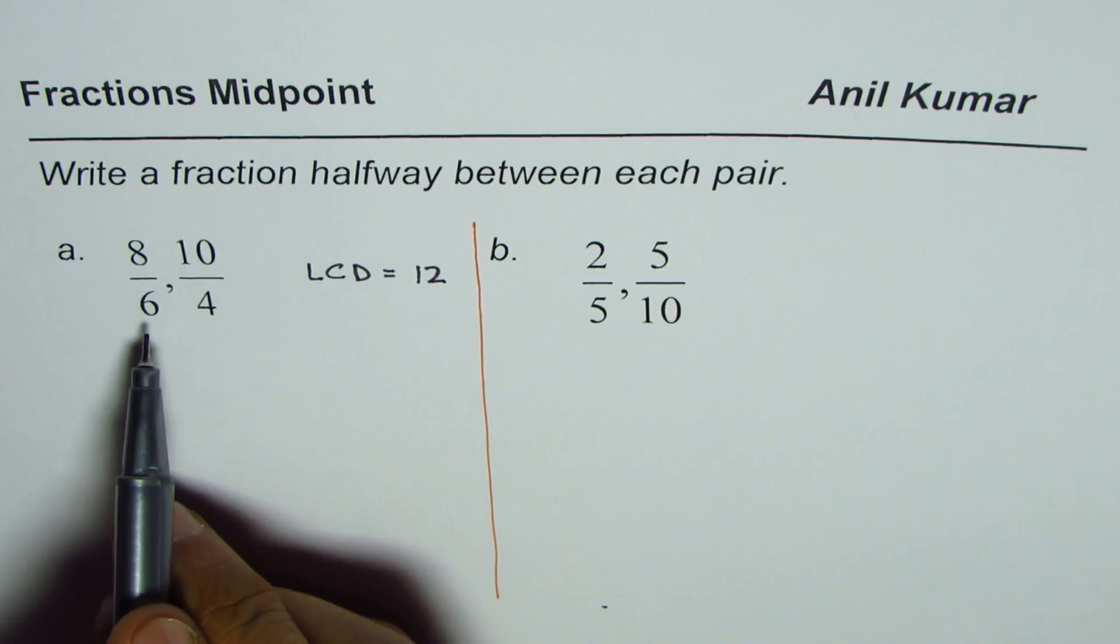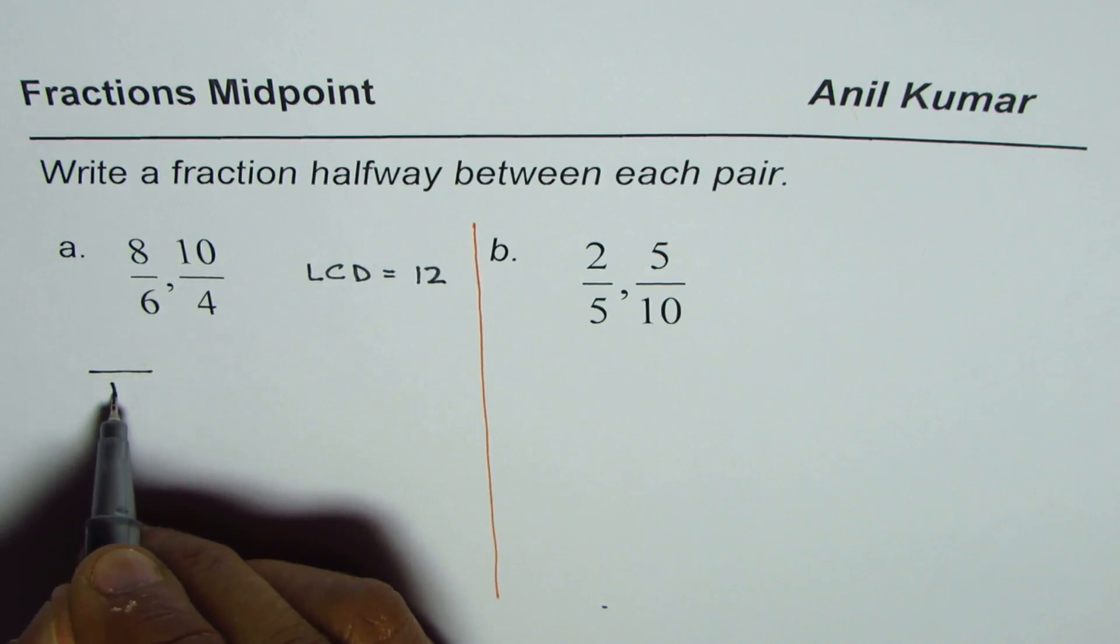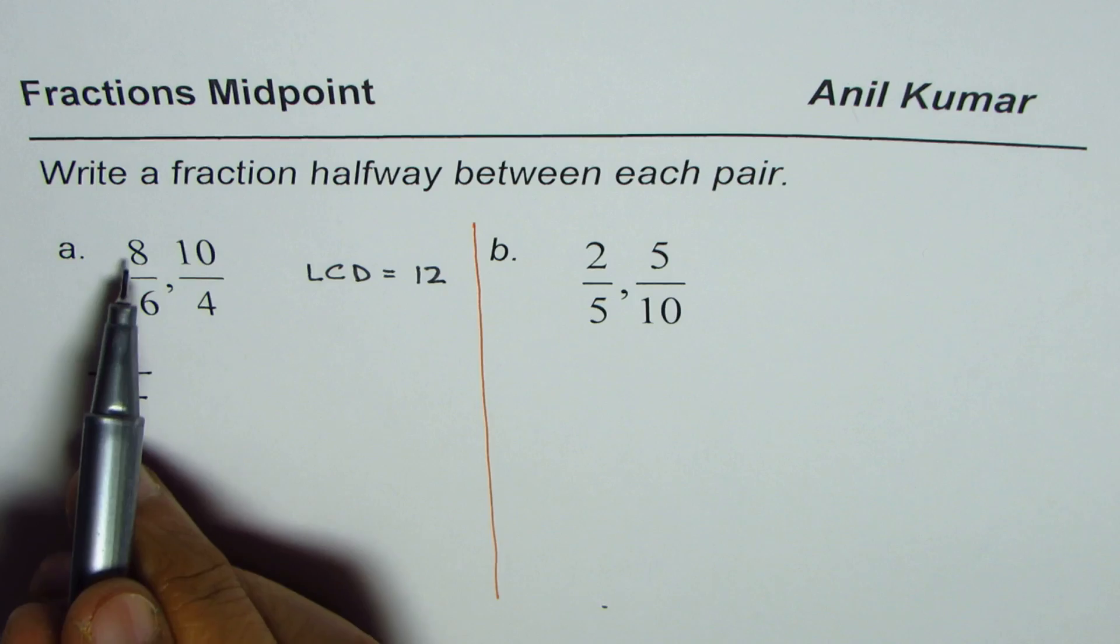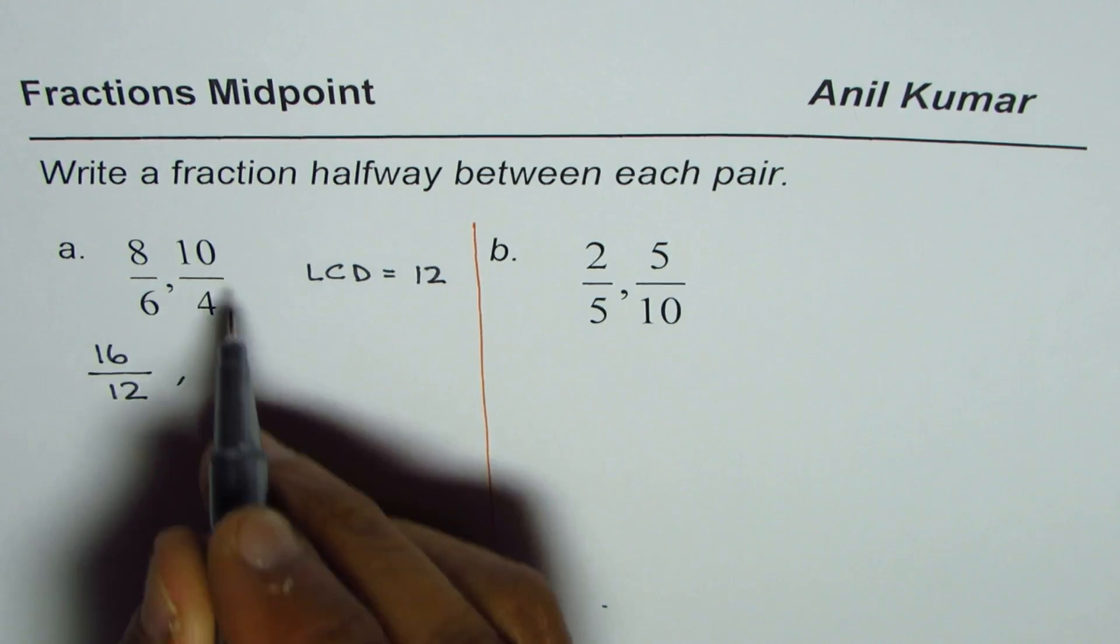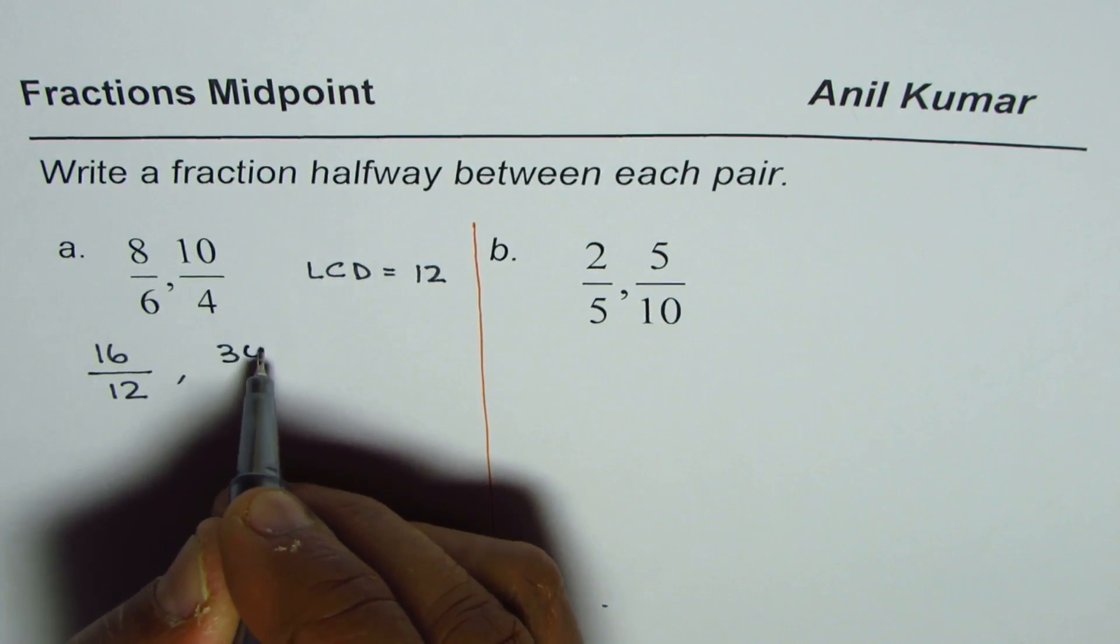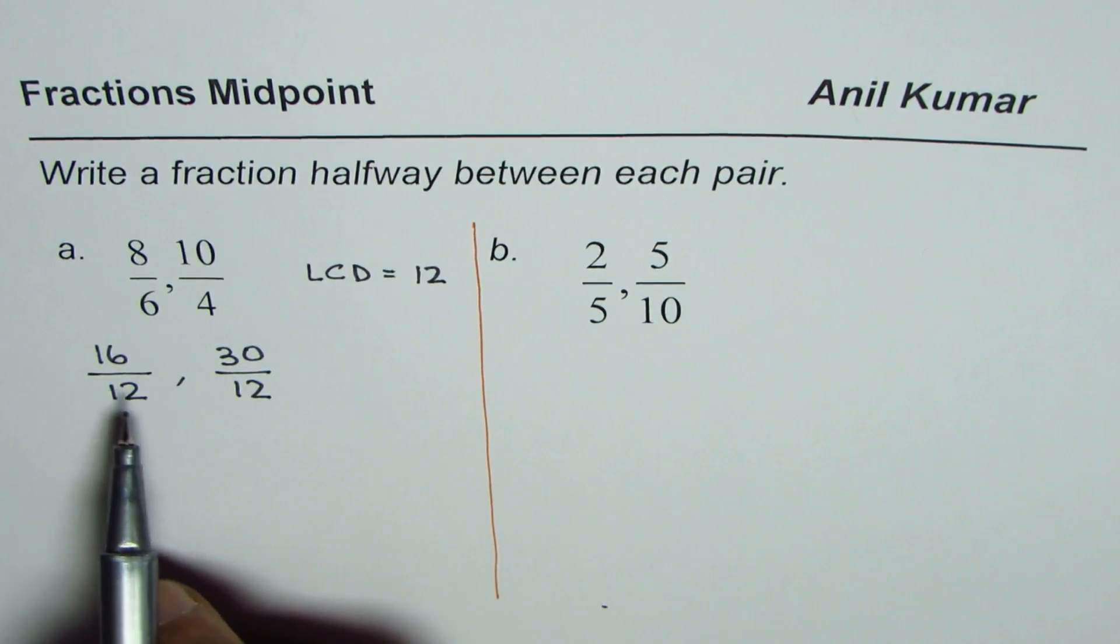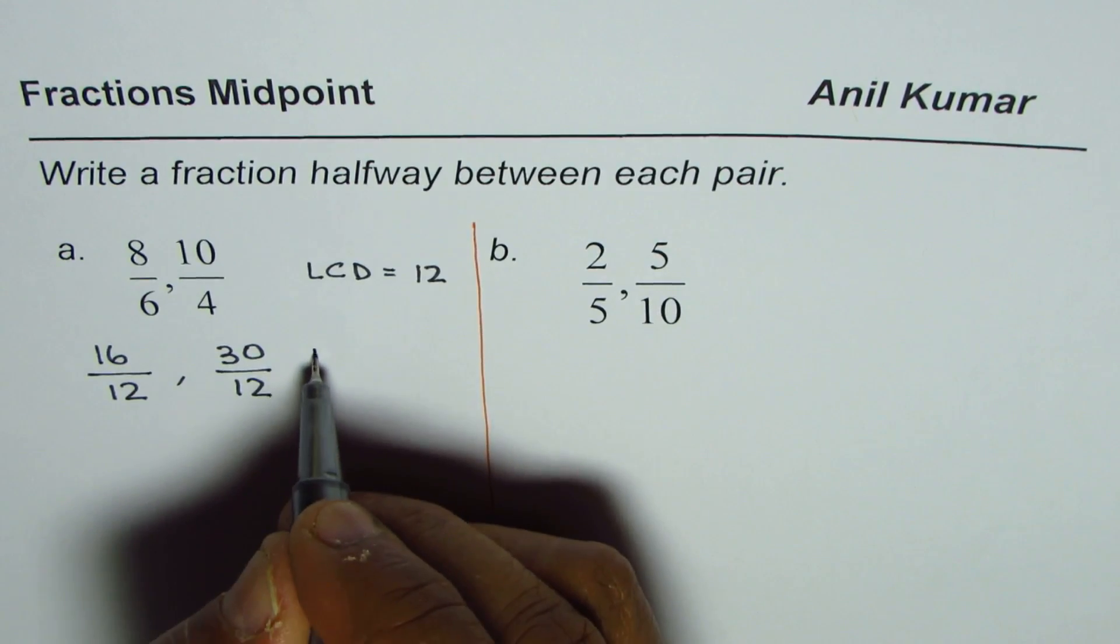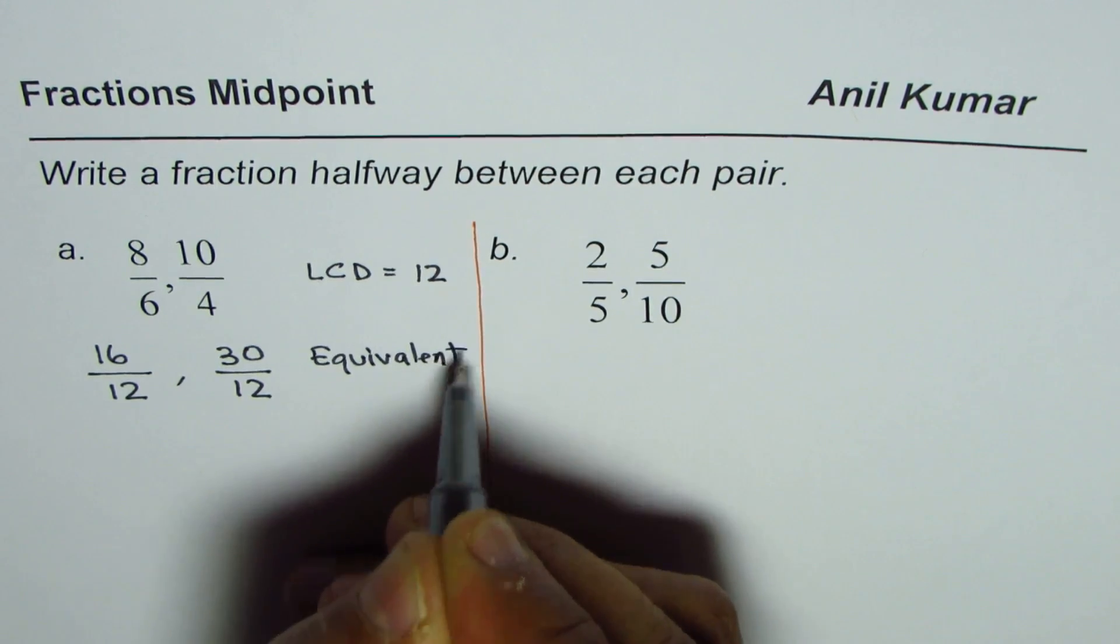Let us rewrite them with denominator of 12. 6 times 2 is 12. So the first fraction we multiply both by 2. 8 times 2 is 16. The other one we need to multiply by 3. So we get 30 over 12. So these fractions can be written as equivalent fractions.